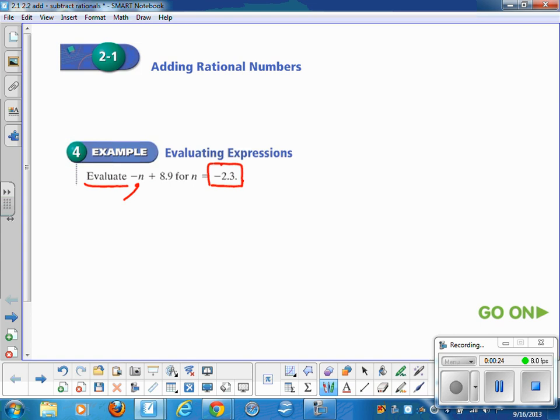Now a lot of people read this sentence and say negative n plus 8.9, but it really is not negative n, it's really the opposite of n. So in this case, since n already is negative, the opposite of n would be like this, the opposite of negative 2.3 plus 8.9. And that's what I mean by the substitution step.